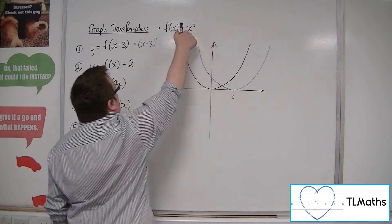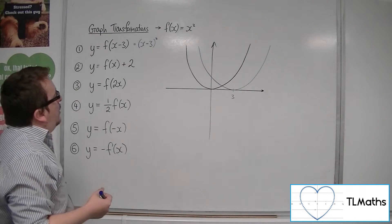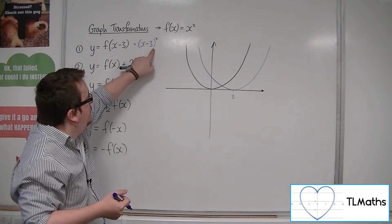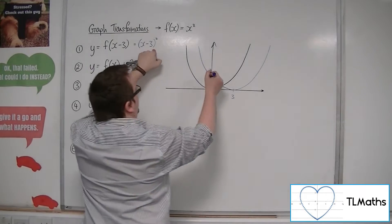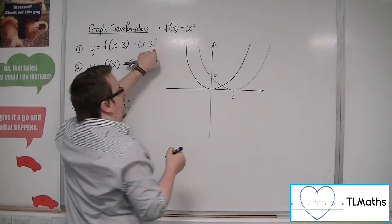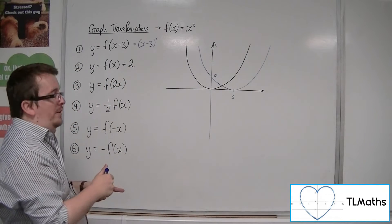So the x in this function has been replaced with x minus 3. If you multiplied that out, you'd get x squared minus 6x plus 9, so you can see it's crossing through the y-axis at 9. That would be a sketch of our transformed curve.